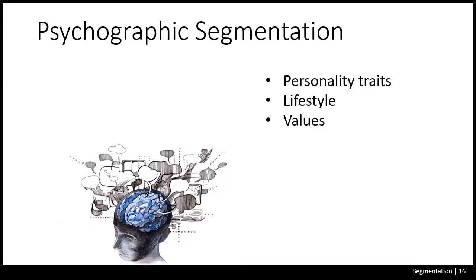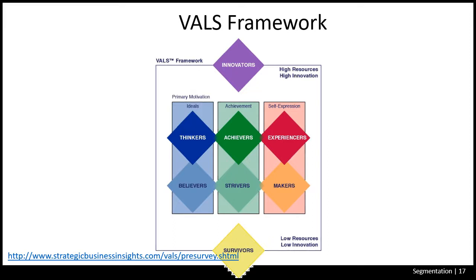Psychographics is basically the science of using psychology and demographics to better understand consumers. In psychographic segmentation, buyers are divided into groups based on psychological personality traits, lifestyles, or values. People within the same demographic group can exhibit very different psychological profiles. One interesting tool in this area is the VALS framework — a series of online questions that loads U.S. adults into about eight primary groups, combining demographics with attitudinal questions. About 80,000 people complete this survey every year, so it is continuously updated.